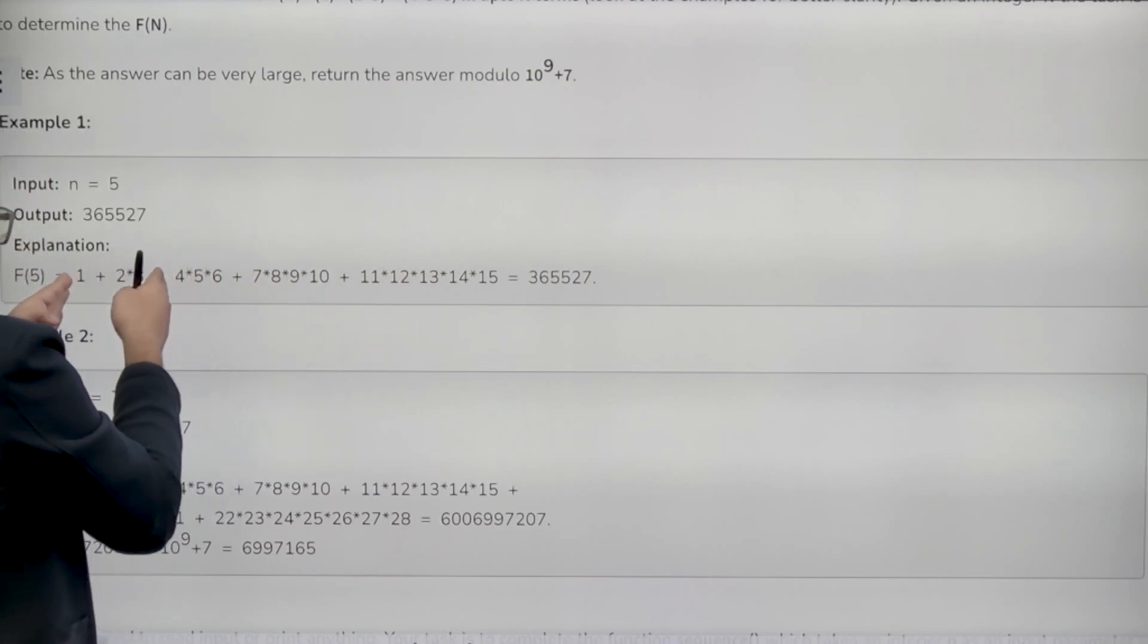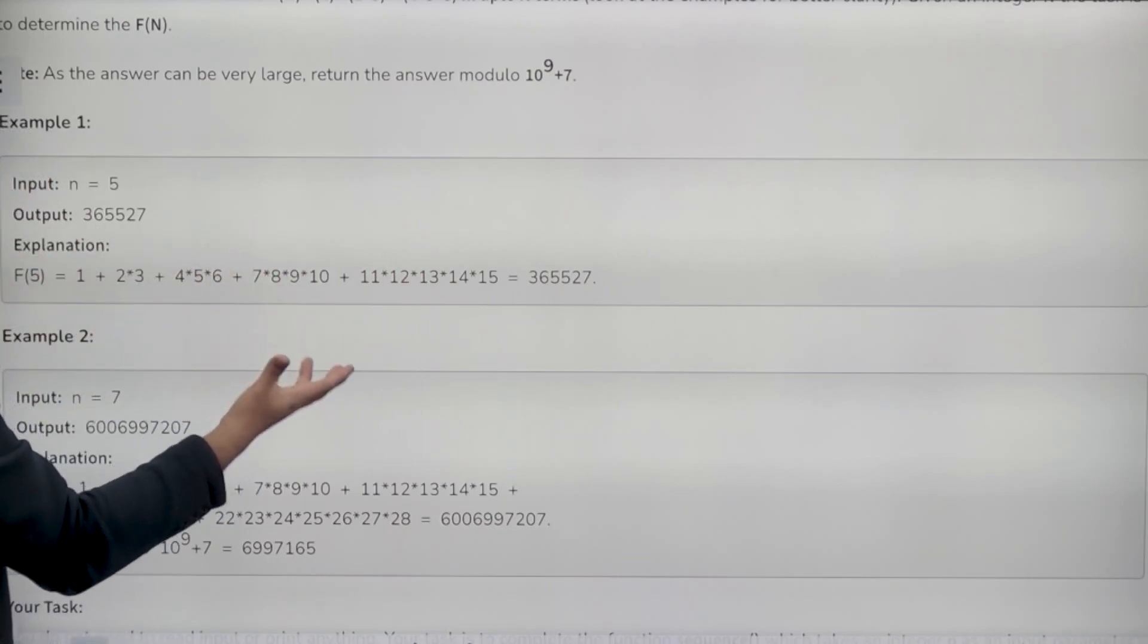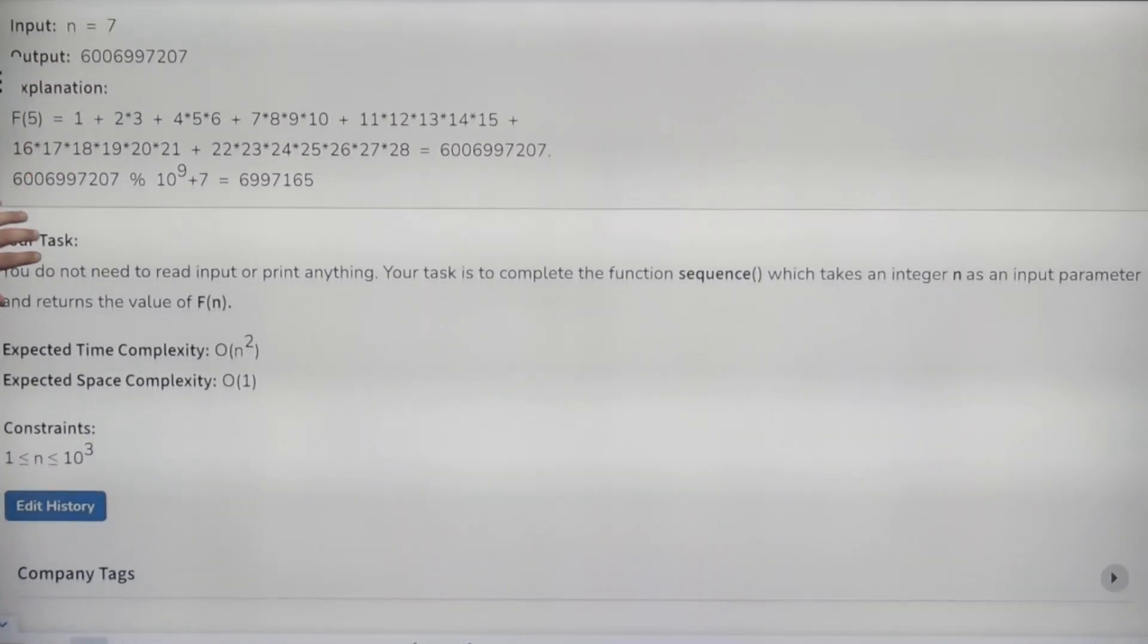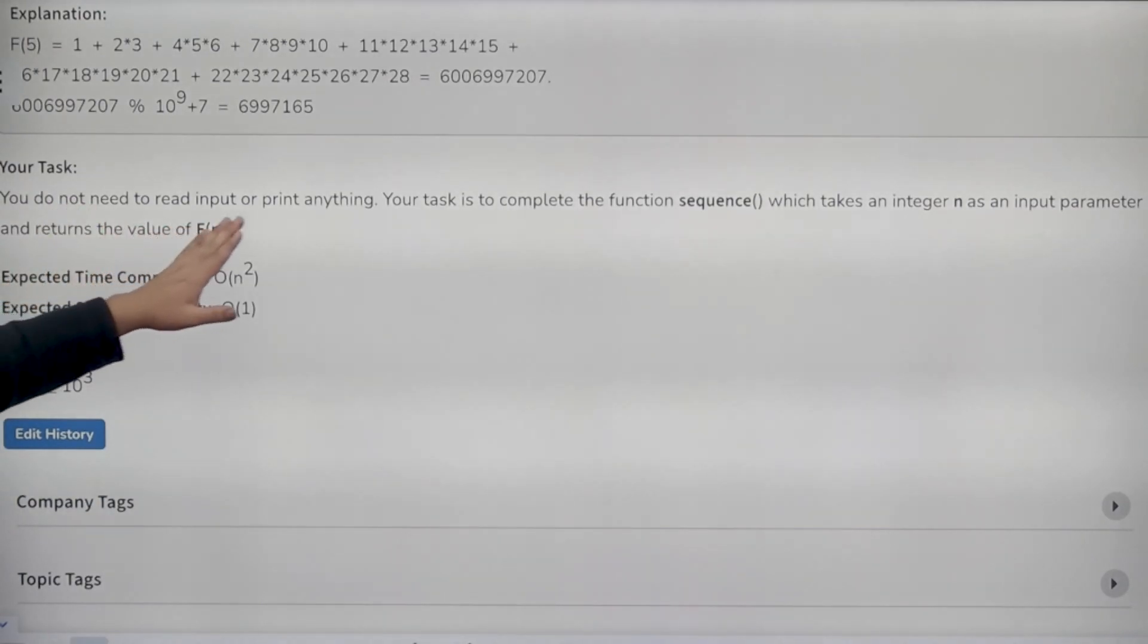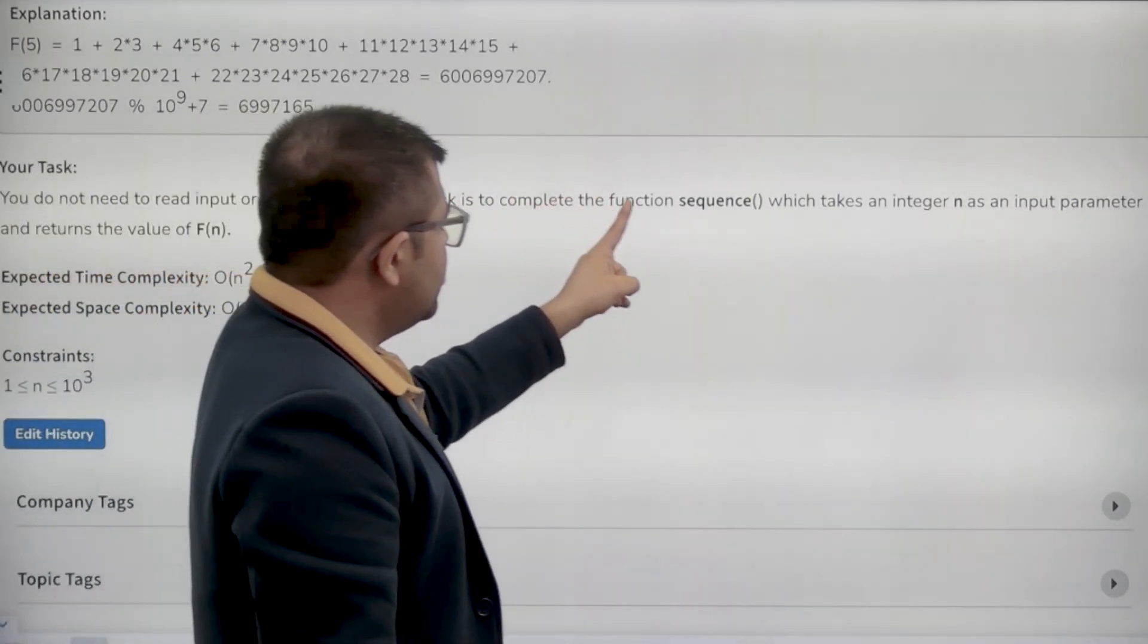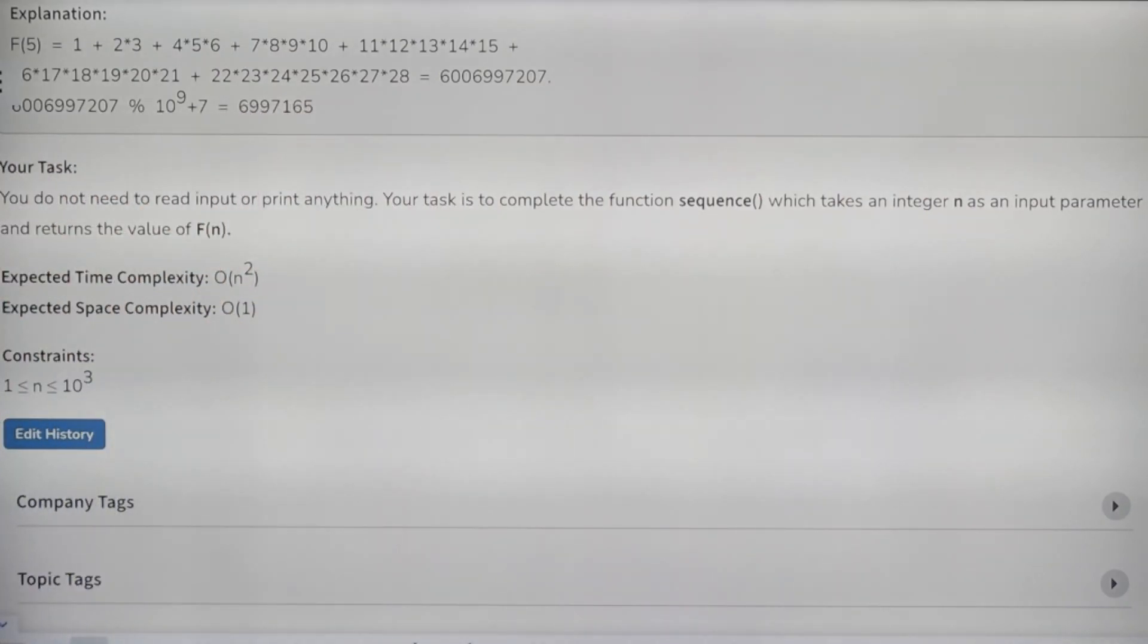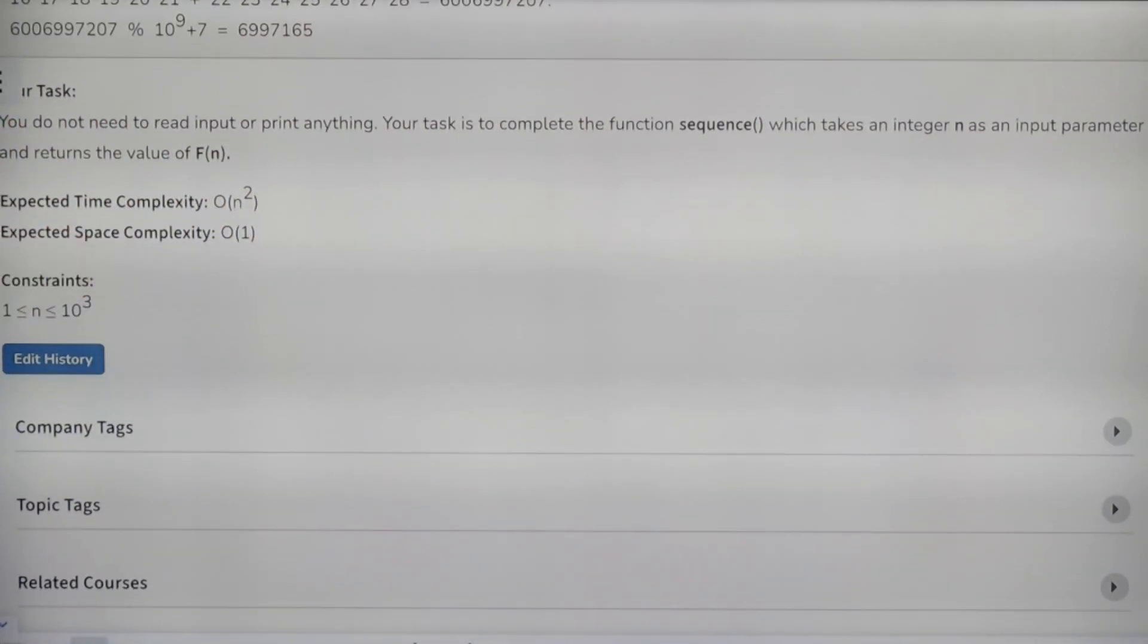Total terms are n. And in ith term, there are i number of elements. Similarly, for n equal to 7, you can have a look at here. Your task is to complete the function sequence which takes integer n as input parameter and returns the answer of f of n. The expected time complexity is n square and space complexity is constant.